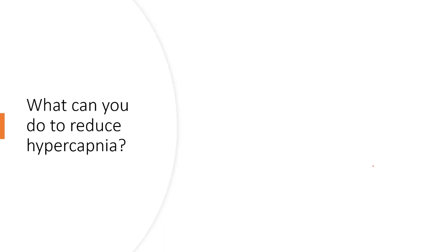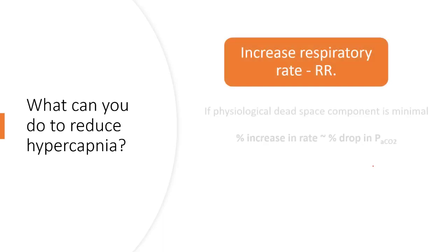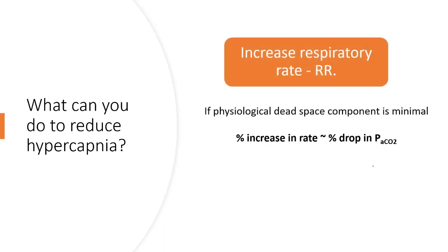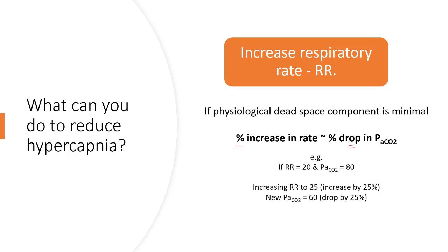To reduce hypercapnia, the simplest answer is to increase the respiratory rate, bringing minute ventilation back to normal. A percentage increase in rate results in a corresponding percentage drop in PaCO2. For example, if your respiratory rate was 20 and PaCO2 was 80, increasing the rate from 20 to 25 — a 25% increase — would drop PaCO2 by 25% as well.